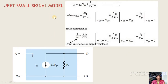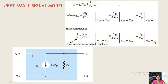For the JFET small signal model, using those three parameters, the drain current can be written as: ID = GM·VGS + (1/Rd)·VDS. Here GM = dID/dVGS at constant VDS, and small letters indicate AC (changing) values while capital letters indicate DC values. From the drain resistance, 1/Rd = dID/dVDS at constant VGS. From this drain current equation, we can construct the two-port small signal model.